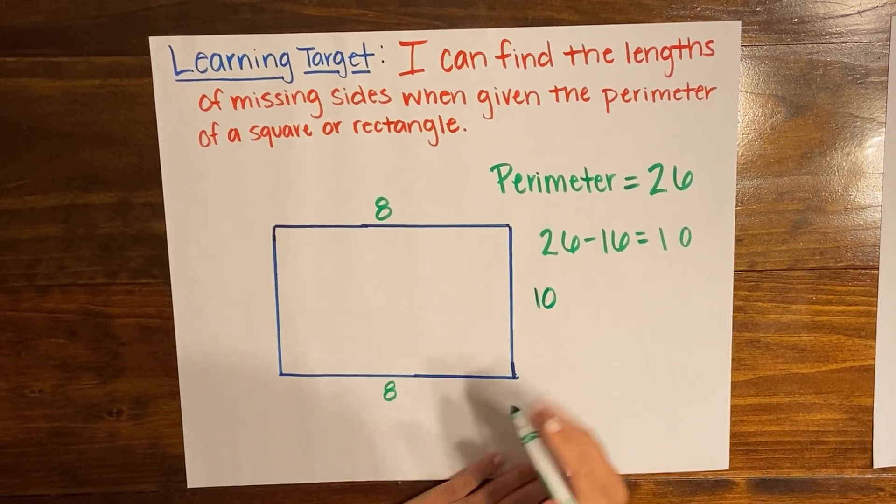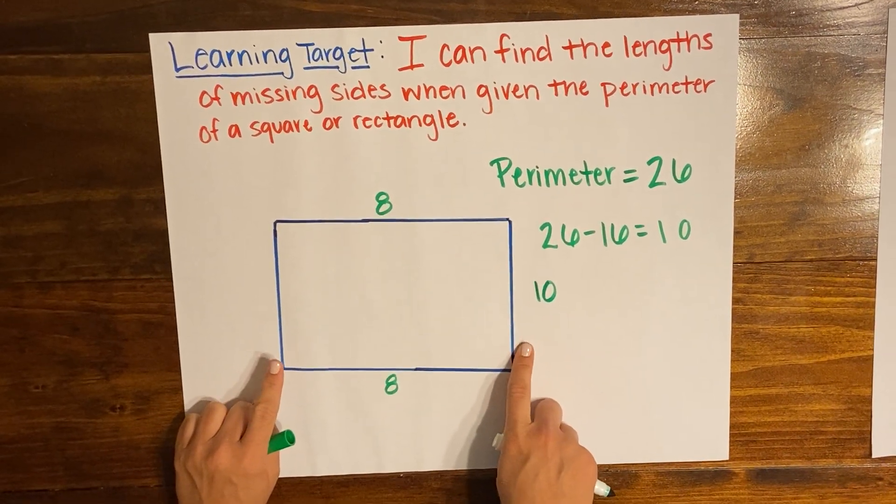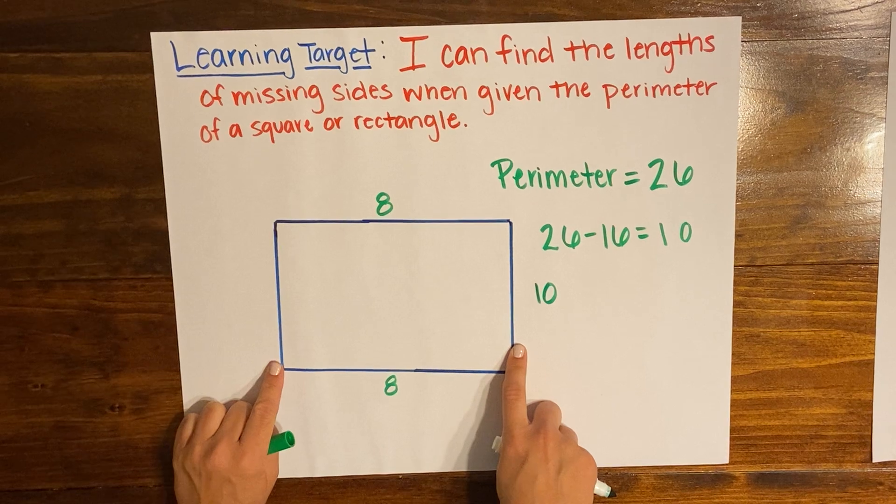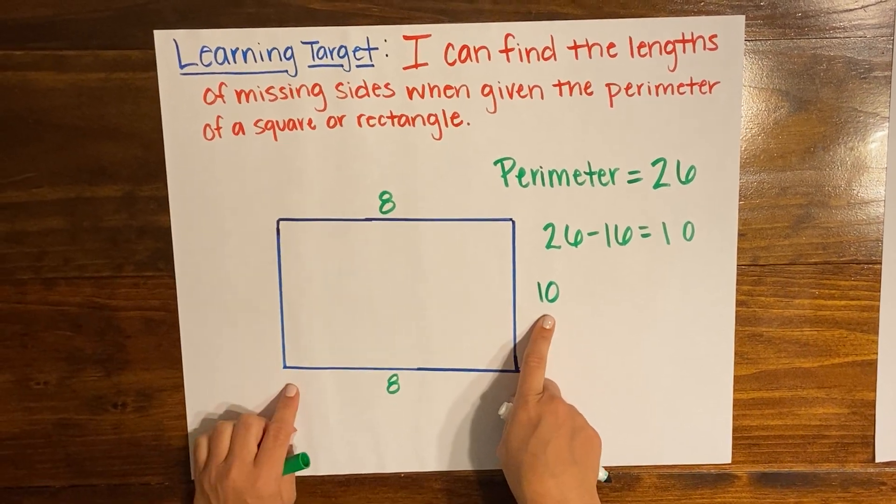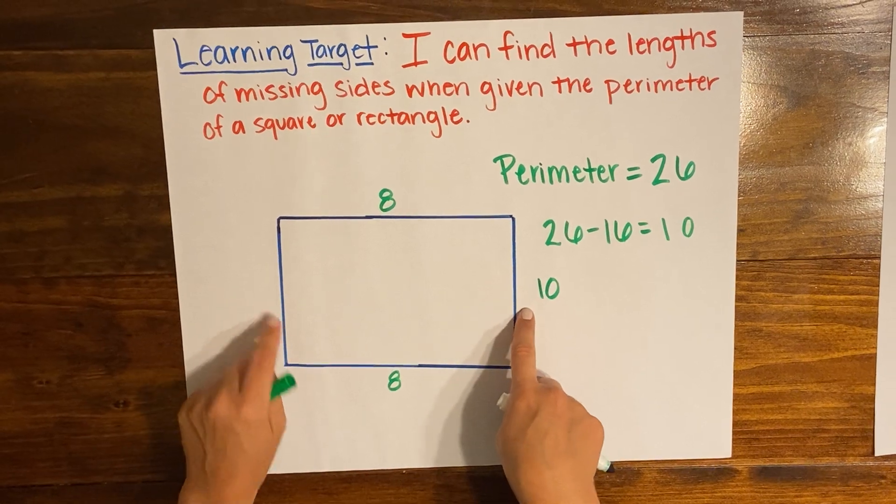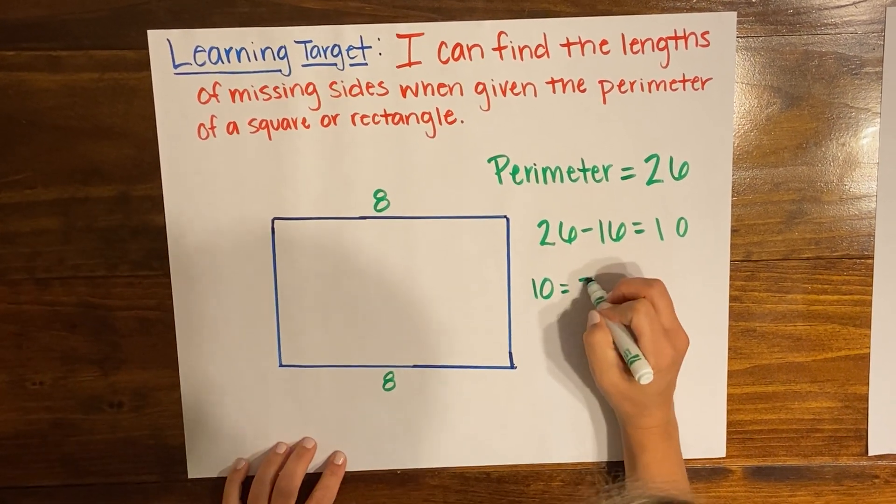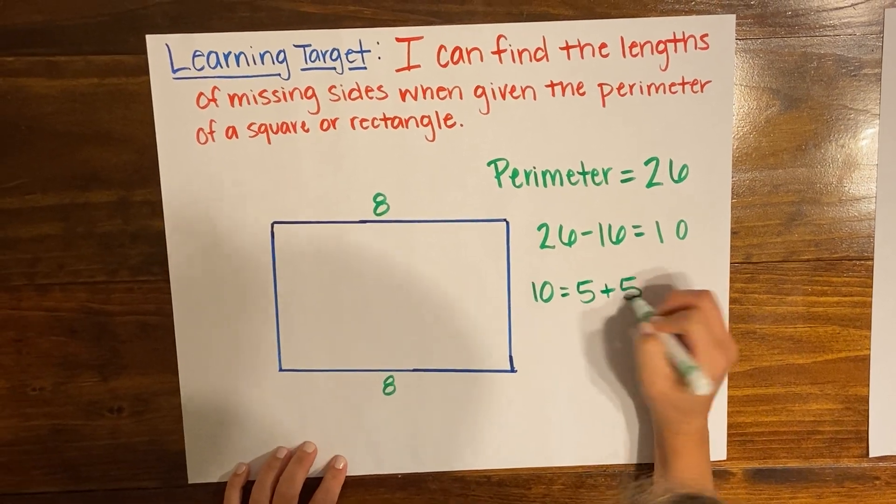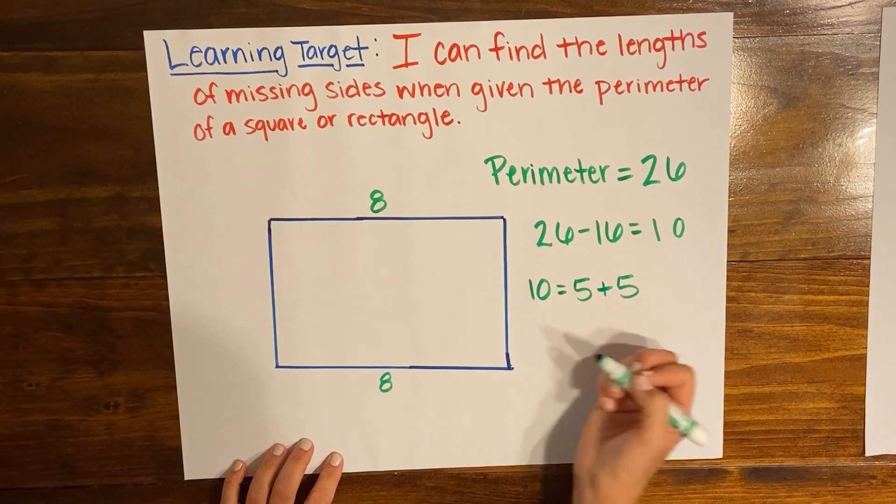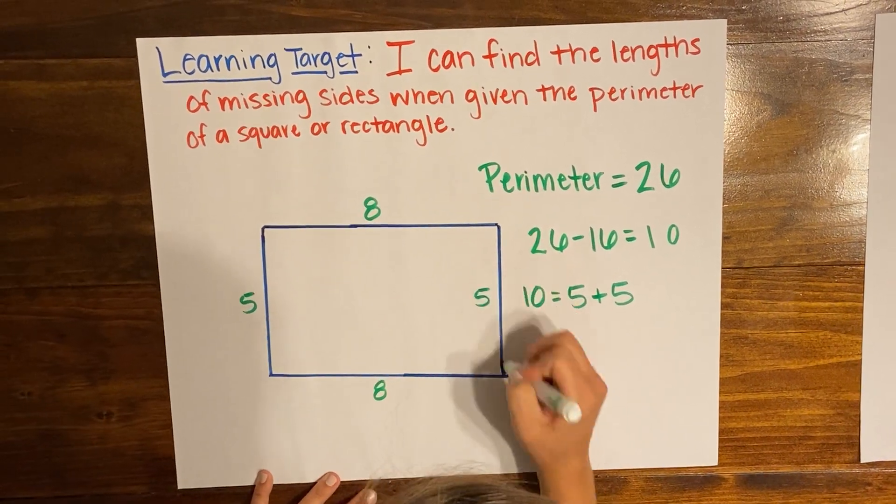So I know that these two sides are equal because it's a rectangle. And so I'm thinking back to my doubles facts and I know that 5 and 5 is what's gonna give me 10 because they have to be equal on both sides here. So the only math fact that I know that gives me 10 with the same number is 5 and 5. So that means that I can fill in this side is 5 and I can fill in this side is 5.